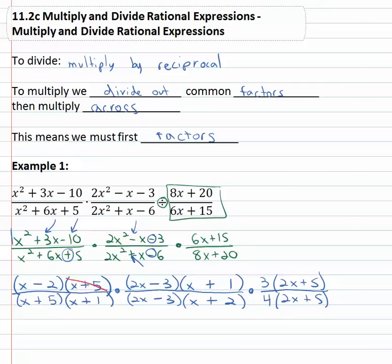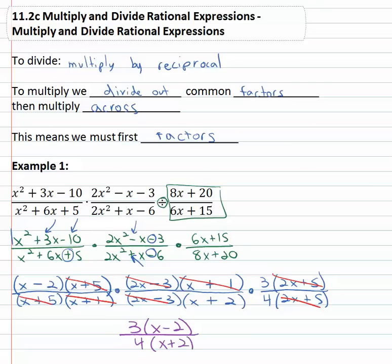We see x plus five in numerator and denominator. Two x minus three in numerator and denominator — always taking one from the top and one from the bottom. There's an x plus one, and there's a two x plus five. That's all that matches identically, so in the numerator we put three times x minus two, and over in the denominator we have four times x plus two. And this is our final simplified reduced result.